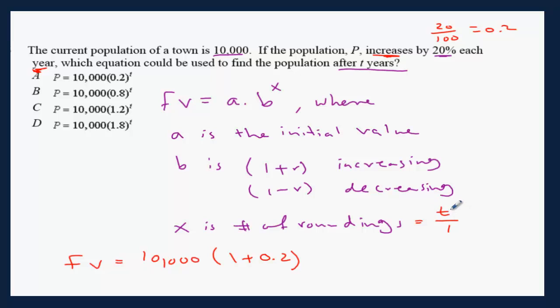The total number of years divided by the value of the amount of each rounding, each round, t over 1, which is the same as t.